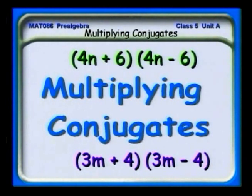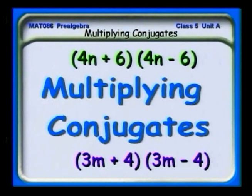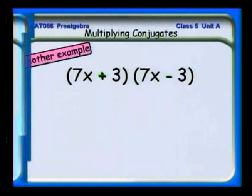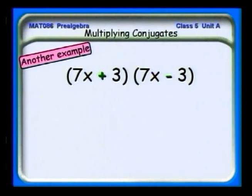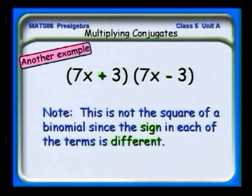We're going to look now at another case very similar to squaring, but you have to be careful. We're going to talk about multiplying conjugates. A conjugate is where you have, for example, (4n + 6)(4n − 6), or the conjugate of (3m + 4) is (3m − 4). This is not a square because the sign is different, and it will lead to a different result when we do the multiplication.